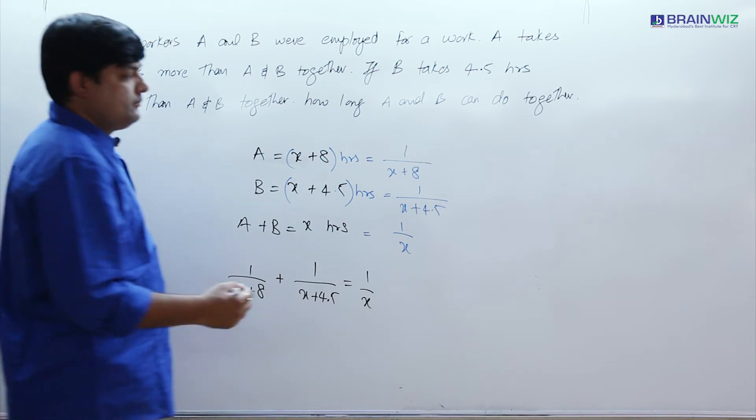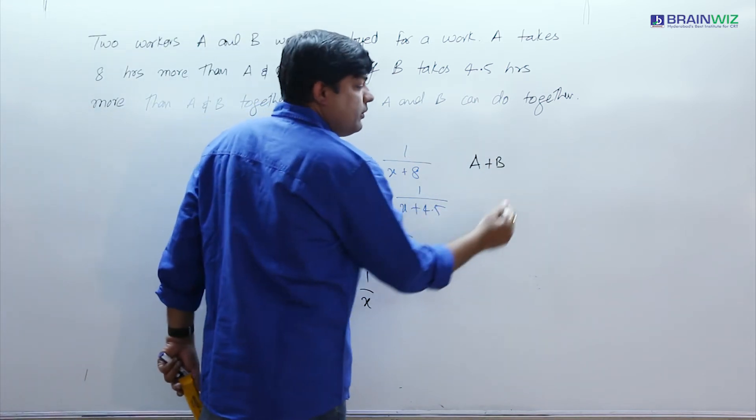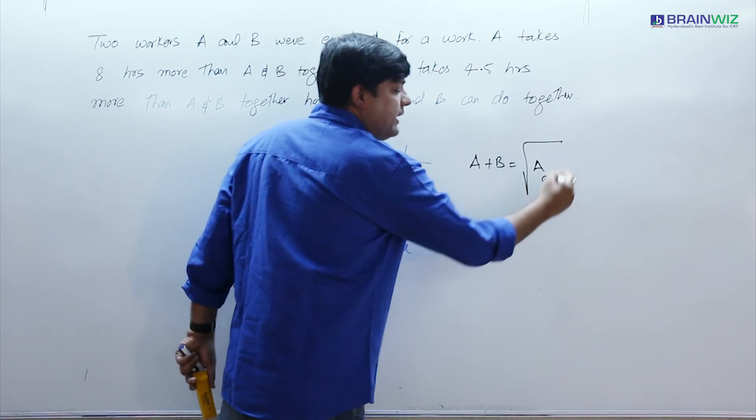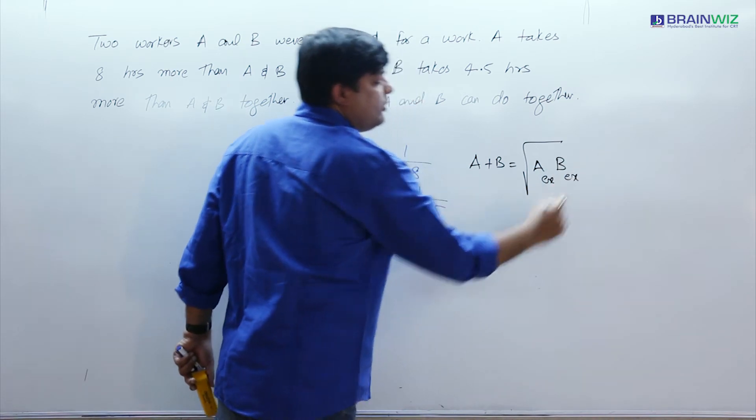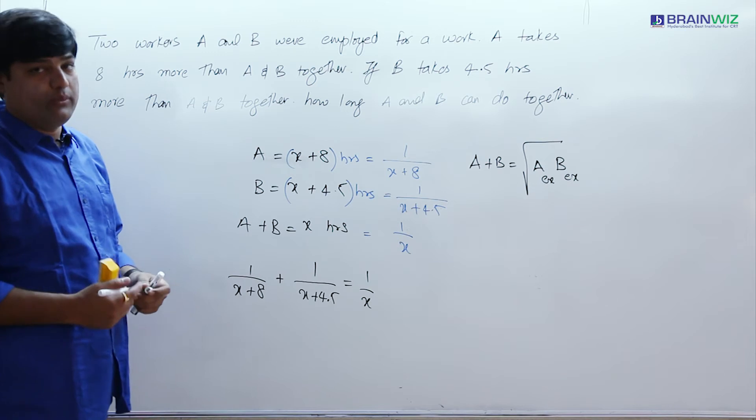So instead of doing all this, we can use one short formula. A and B, the total work they will do is under root of A's extra work compared to A and B and B's extra work compared to A and B. So using this small formula we can get it much faster.